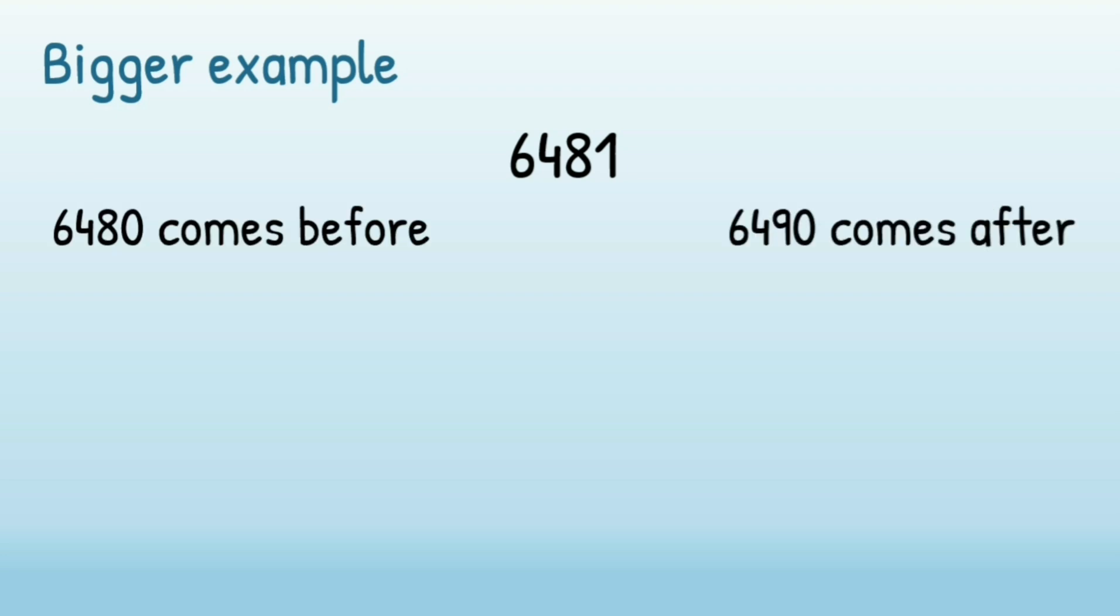Let's have a look at a bigger example. If we look at 6481, again, you need to know your multiples of 10 that come before and after the number. So we've got 6480 and 6490. Let's place that on a number line.